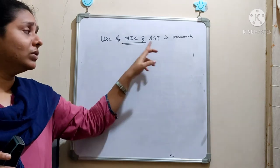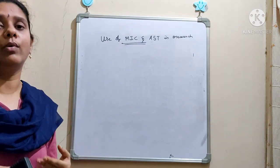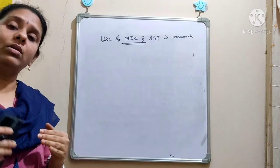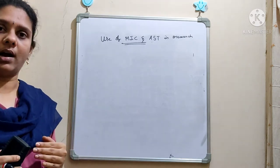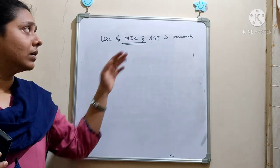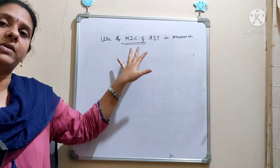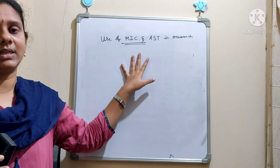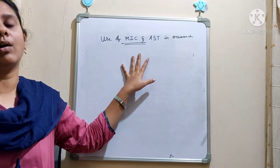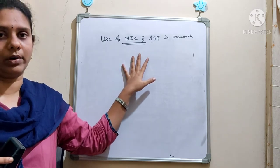Compared to AST, MIC is more accurate and more efficient because certain drugs may not diffuse through the agar media. For that reason we can go with the MIC, and it is the first step for the preclinical study to identify if any compound has an antimicrobial property or not.